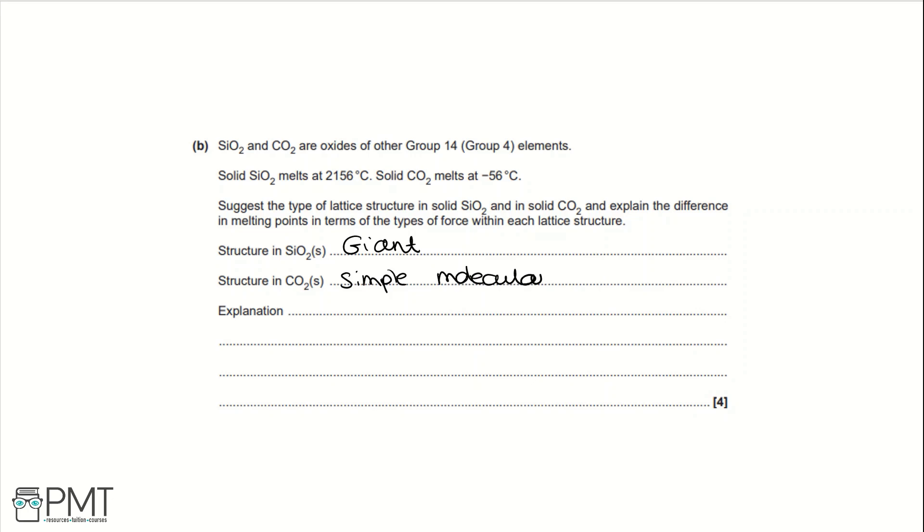In CO2 you have London forces. And in SiO2 the covalent bonds are stronger than the intermolecular forces in CO2 or the London forces. And therefore more energy is required to break the covalent bonds in SiO2 than is required to break the intermolecular forces in CO2. That's why SiO2 has a much higher melting point than CO2 where it's got a negative melting point.